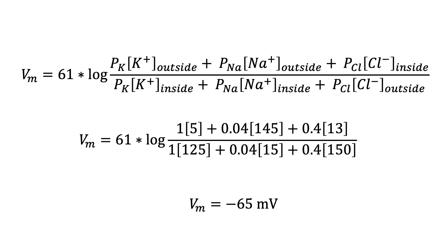However, at rest the membrane is permeable to potassium, chloride, and sodium. To calculate the membrane potential, the Goldman equation is needed. Like the Nernst equation, the constant 61 is calculated using values such as the universal gas constant and temperature of mammalian cells. The p variables are the relative permeabilities of each ion, with potassium being 1, sodium being 0.04, and chloride being 0.4.